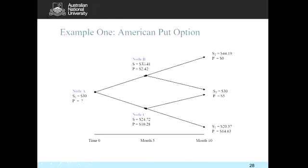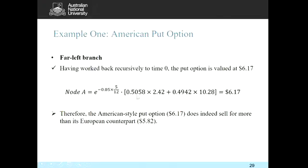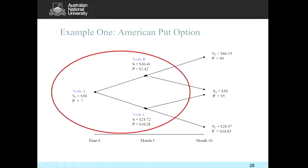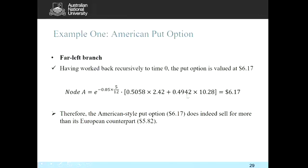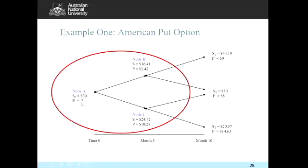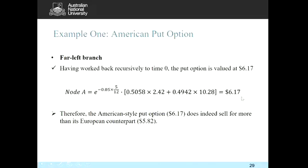For the final branch, with 50.55% chance the option value is $2.42 and 49.42% chance it is $10.28 (the intrinsic value we chose at node C). Discounting back five months gives an American put price of $6.17. Comparing with the European counterpart ($5.82), the American option is worth more because it grants the same rights as a European option plus the flexibility to exercise early — and that additional flexibility is reflected in the higher price.